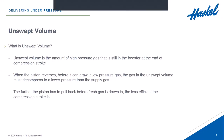Another important aspect of gas compression is the unswept volume inside the compression device. The unswept volume is the amount of high-pressure gas that's still in the booster at the end of the compression stroke. All compressors, no matter what the technology, will have some amount of unswept volume left in them at the end of the stroke. When the piston reverses, before it can draw in fresh low-pressure gas, that gas in the unswept volume has to decompress to a pressure lower than the supply gas to allow it to flow in. The further the piston has to pull back before gas is drawn in, the less efficient that compression stroke is.